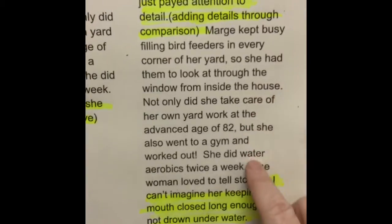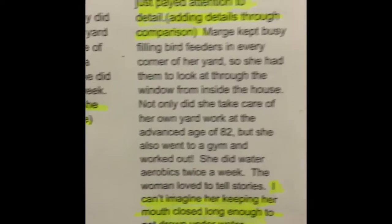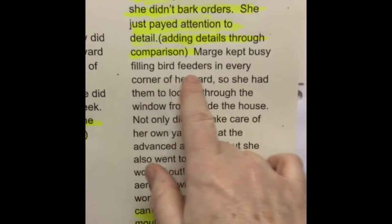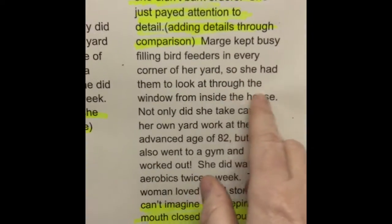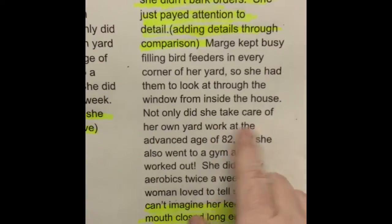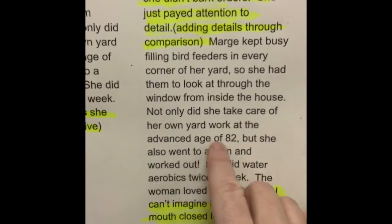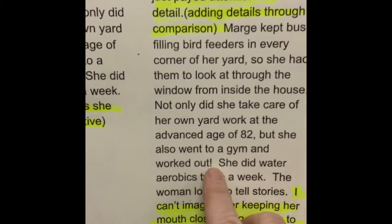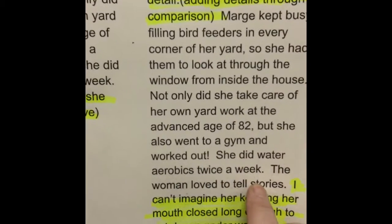Then I kept going and talked about other ways that she liked to be busy. She kept busy filling bird feeders in every corner of her yard so she had them to look at through the window from inside the house. Not only did she take care of her own yard work at the advanced age of 82, but she also went to a gym and worked out. She did water aerobics twice a week.